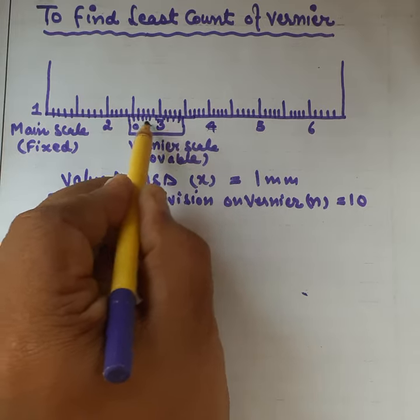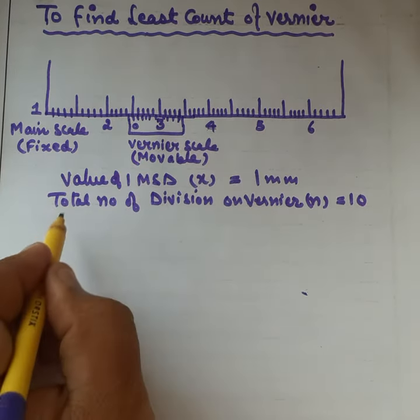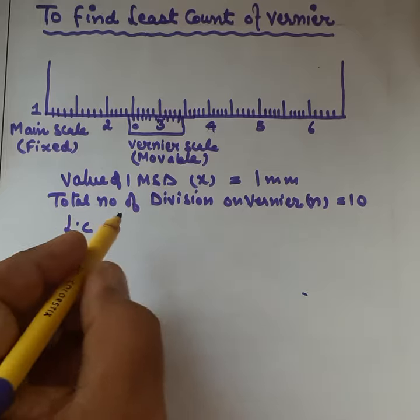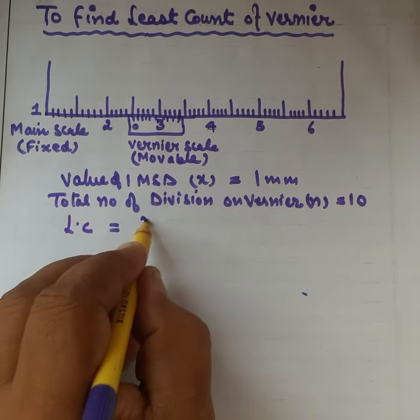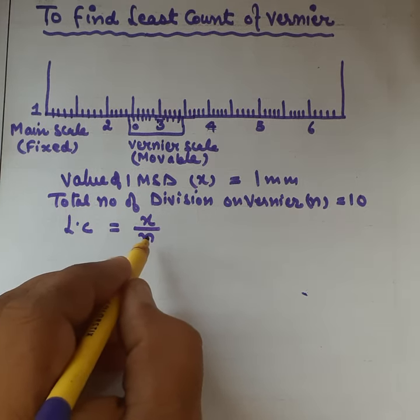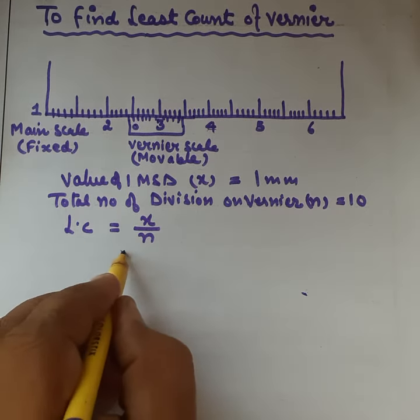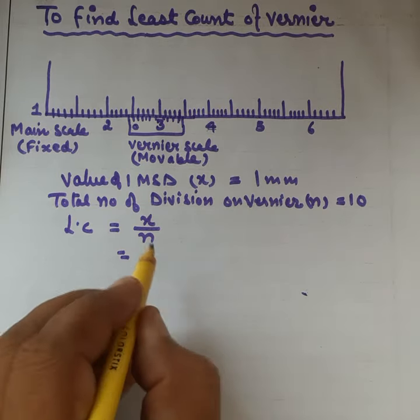Now we have the formula of least count: x over n. So what is the value for x? That is 1 mm.